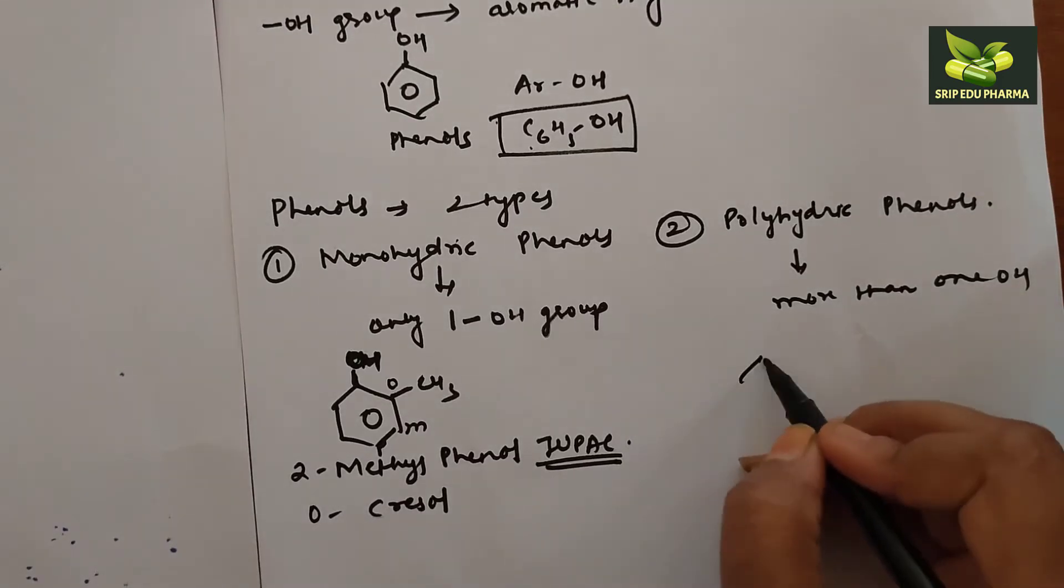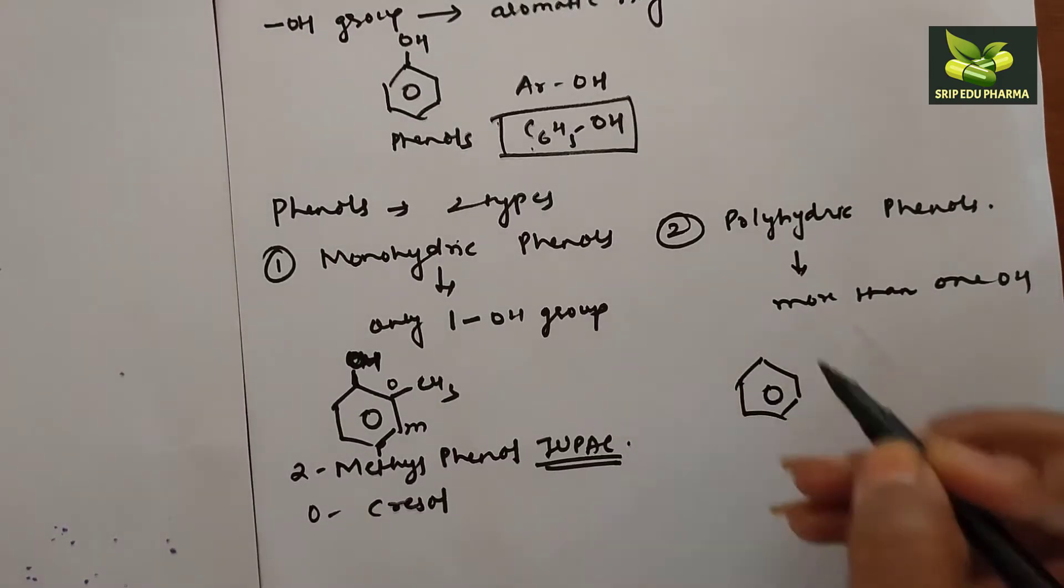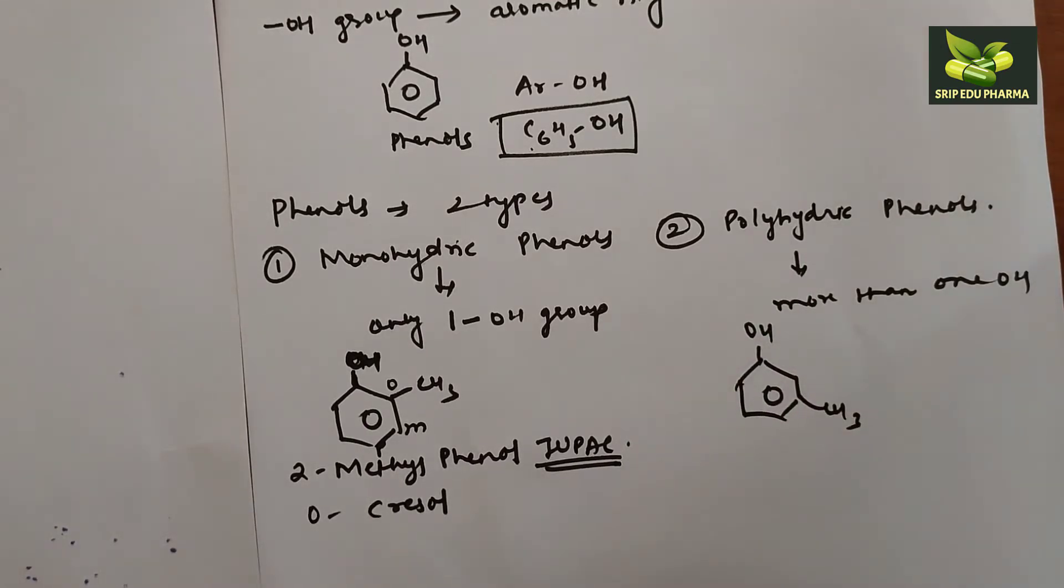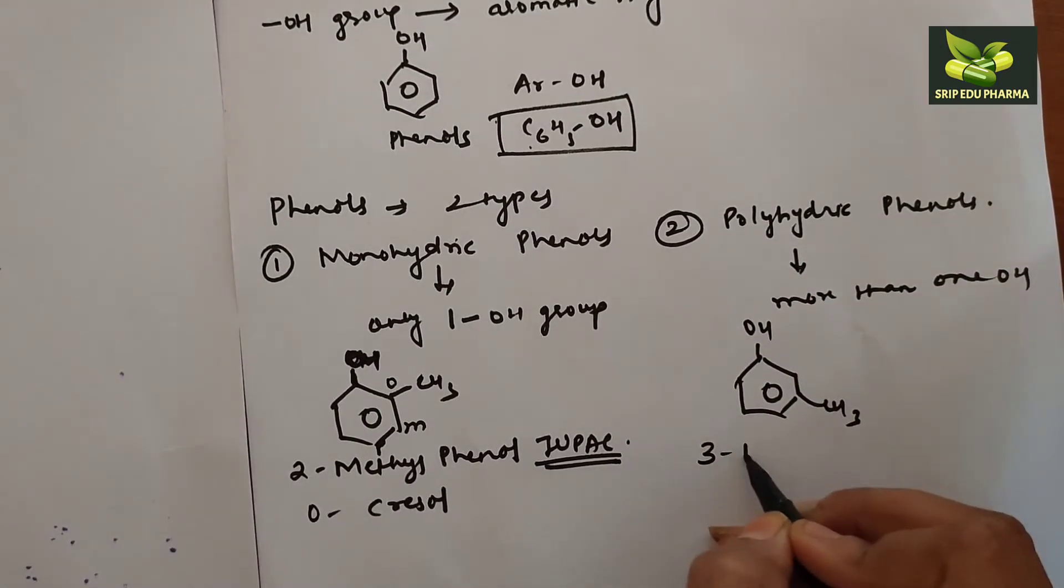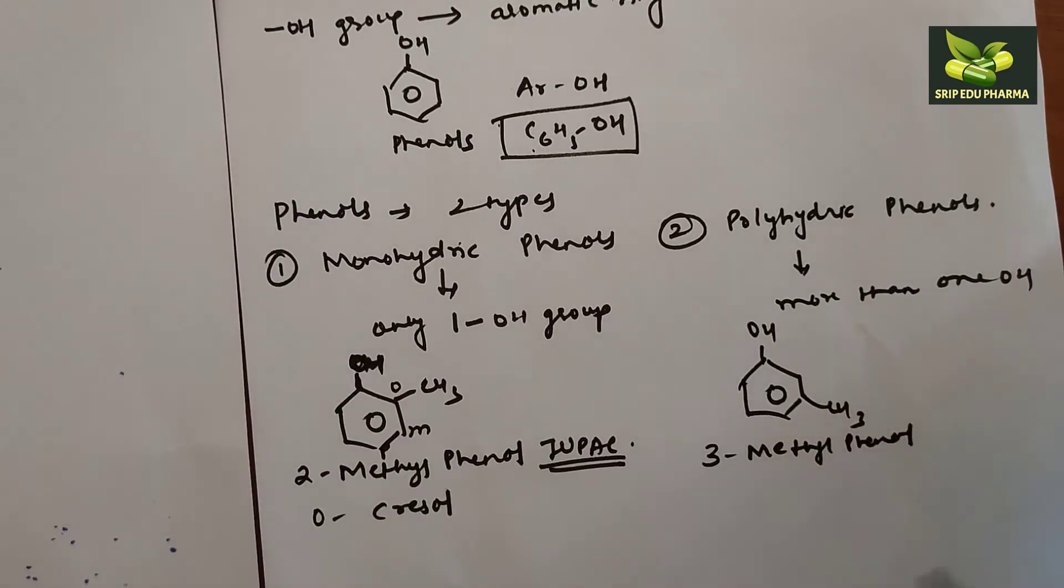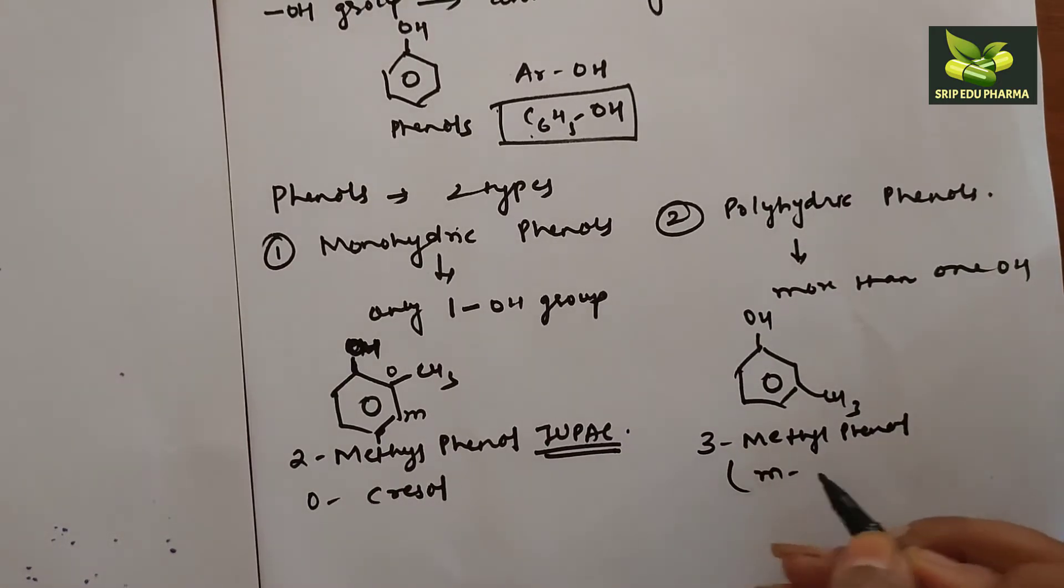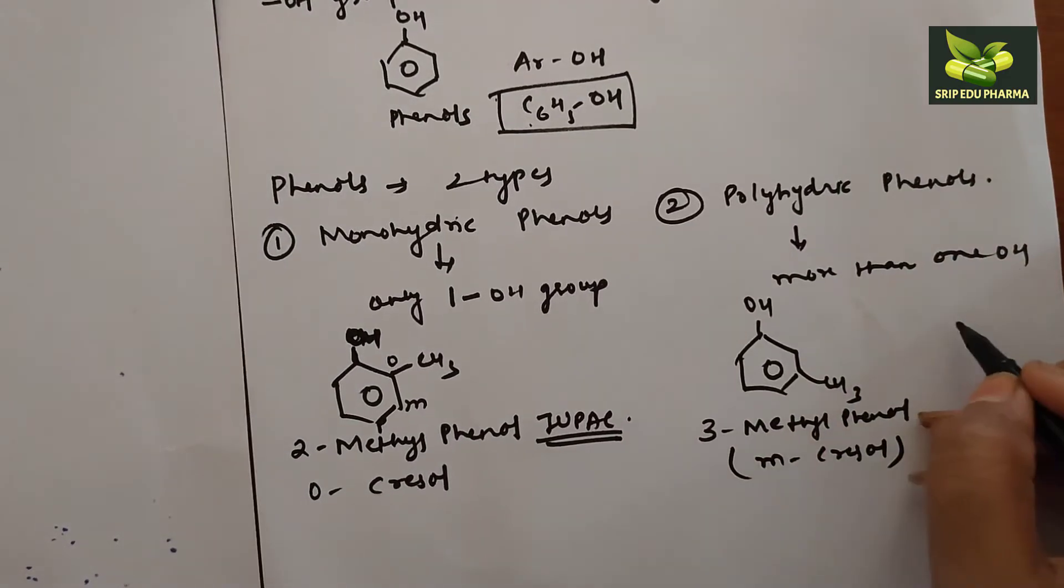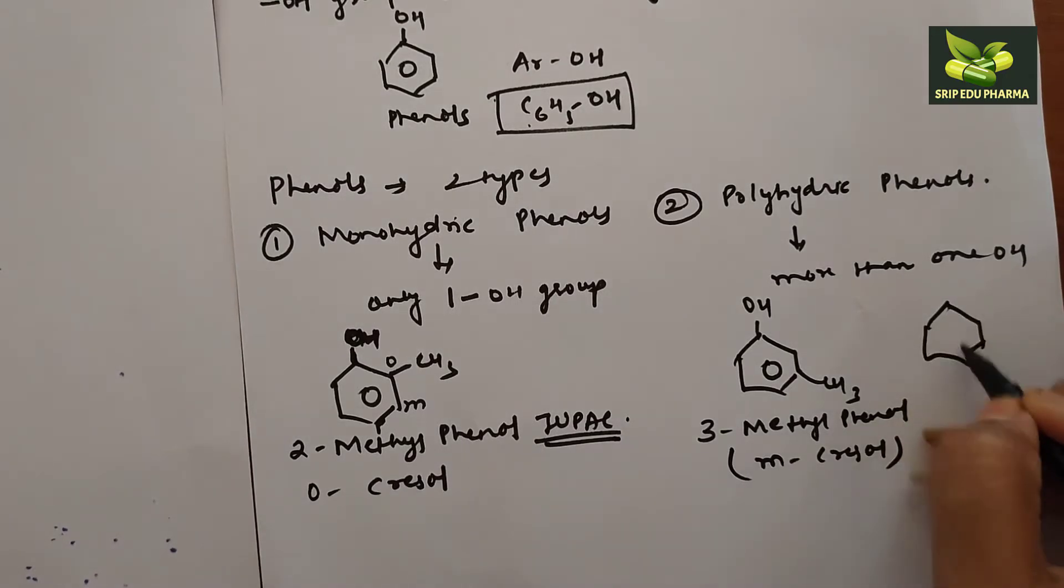Next example is OH and this is CH3. Simple. This is 3-methylphenol, or it is also called meta-cresol. This is the common name.